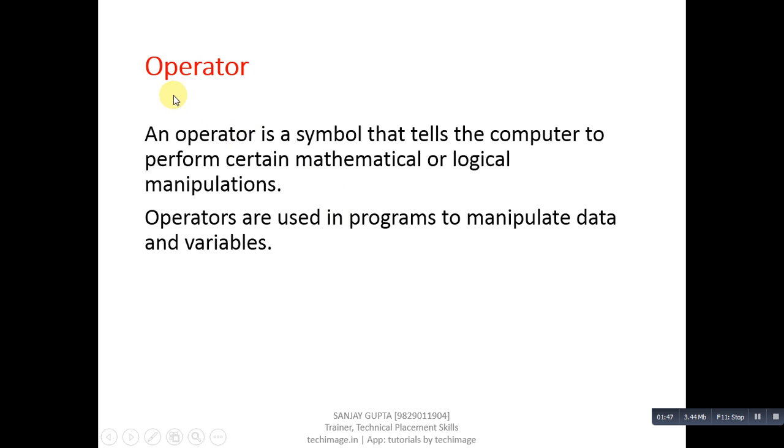An operator is a symbol that tells the computer to perform certain mathematical or logical manipulations. Operators are used in programs to manipulate data and variables. Operators are of basically three types: unary, binary and ternary. And apart from these types, it has various categories.